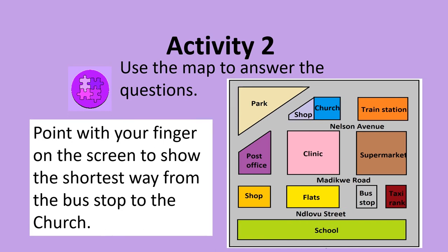Now point with your finger on the screen to show the shortest way from the bus stop to the church. Are you ready? Go! Remember, we want the shortest way. Are you ready? Did you choose this way? If so, well done. That is the shortest way from the bus stop to the church.